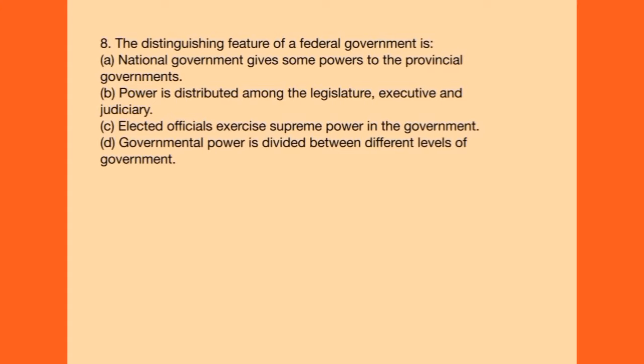Next question: the distinguishing feature of a federal government is — option A: national government gives some powers to provincial government; option B: power is distributed among legislature, executive and judiciary (this is horizontal power sharing); option C: elected officials exercise supreme power; option D: governmental power is divided between different levels of government — this is vertical division of powers, which is the federal feature. The answer is D.